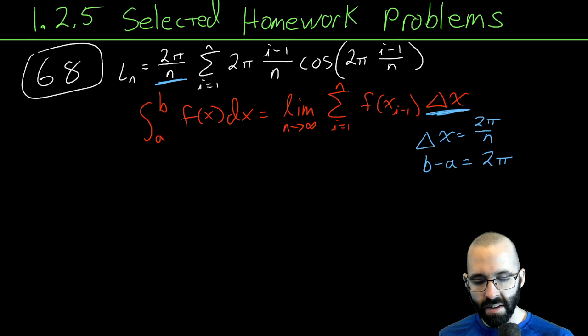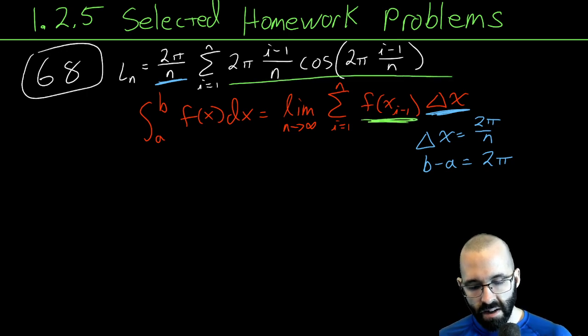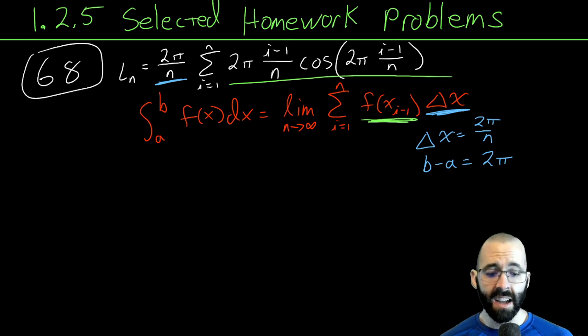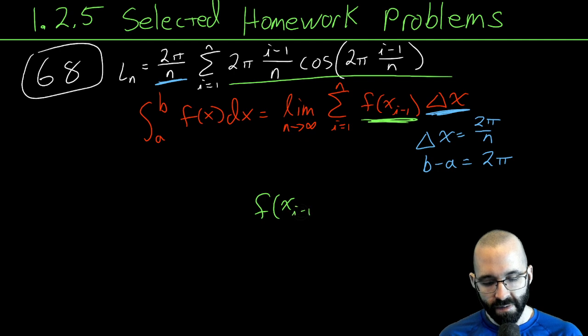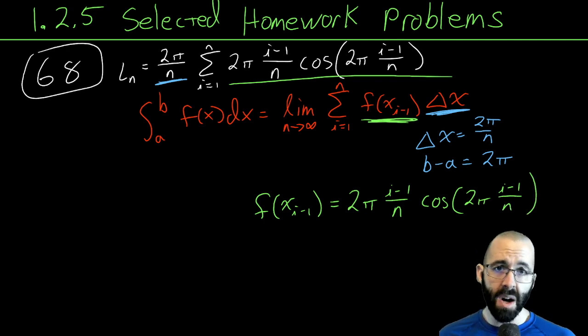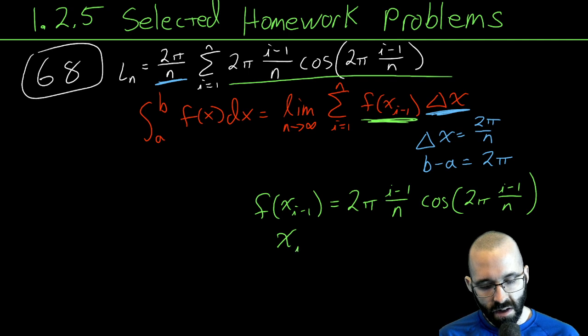And then what's left over? The sum is the sum. We're already taking the limit as n goes to infinity. So this green guy is the same as that green guy. So we have to guess what x_{i-1} is. But once we make our guess, that's going to tell us two other things, and then we can really see whether we're right.